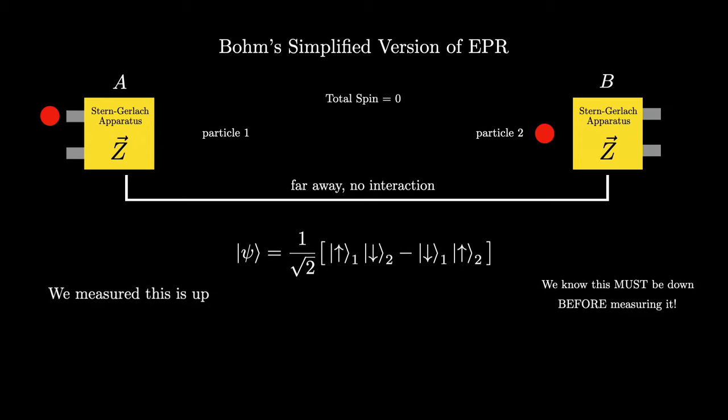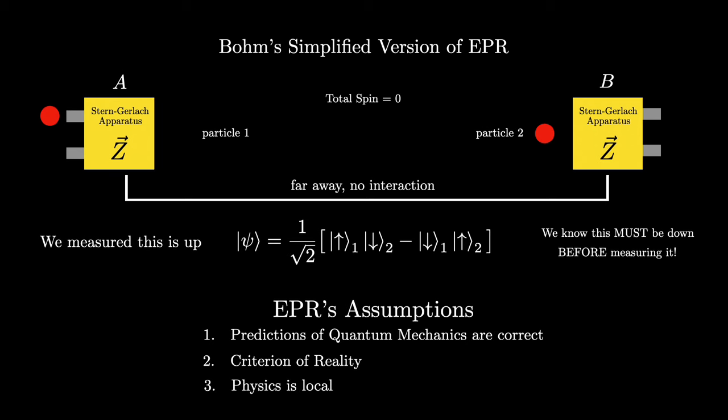Therefore, in light of the three assumptions made by EPR, we have here a situation where, the prediction of quantum mechanics in this case is correct. Since physics is local, and the two apparatuses are very far apart, the measurement on particle one cannot disturb particle two. And we can predict with certainty the spin of particle two, without disturbing it. Therefore, there must be some element of reality responsible for this.